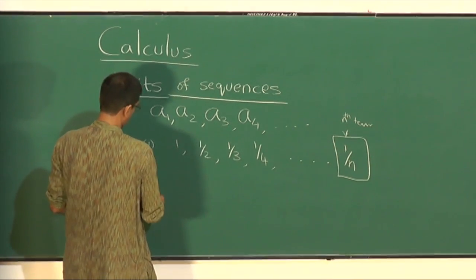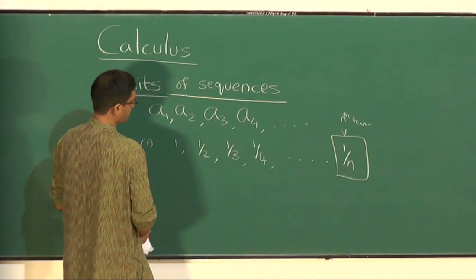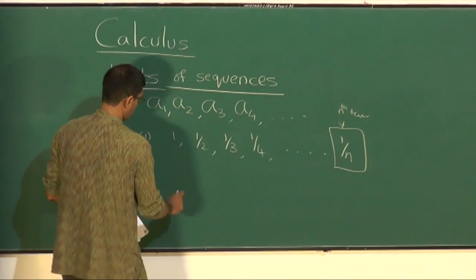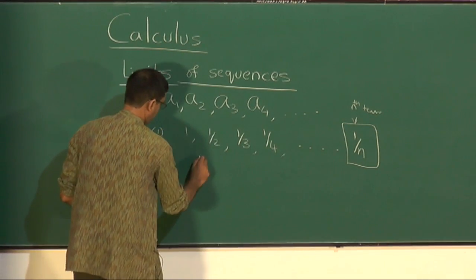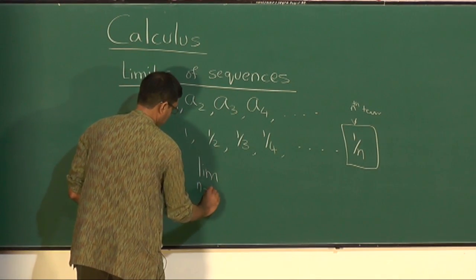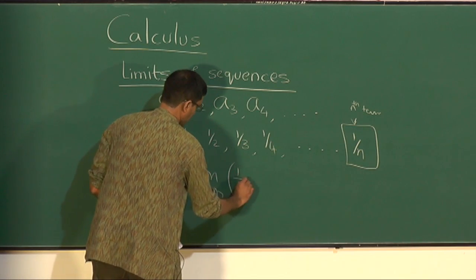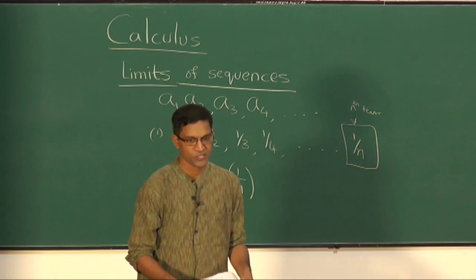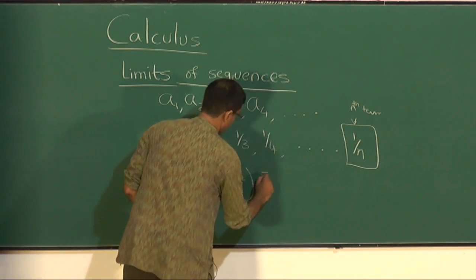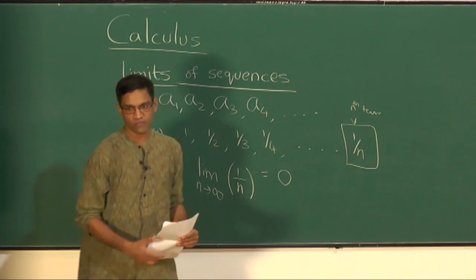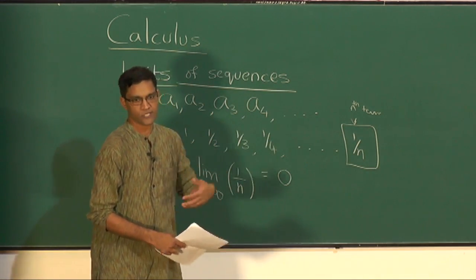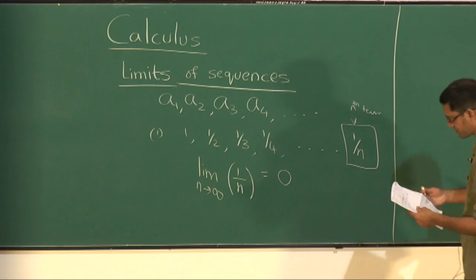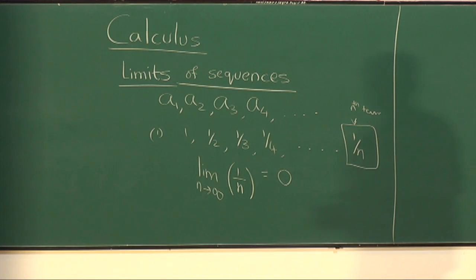Not all sequences need to be given by simple formulae like this. Specifically, for the sequence 1/n, I want to ask: what happens to the sequence as n goes to infinity? What's the limit of the nth term, 1/n, as n tends to infinity? The answer is 0. What we mean, of course, is that as n becomes larger and larger, the nth term becomes closer and closer to zero. We sort of know intuitively what the limit means.